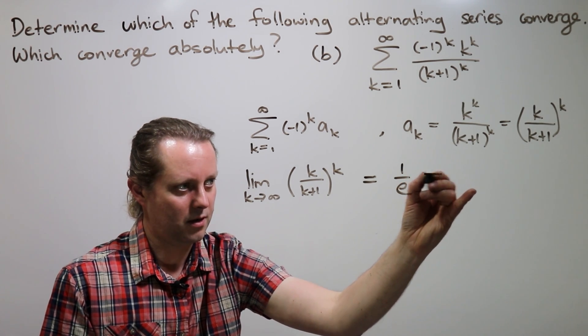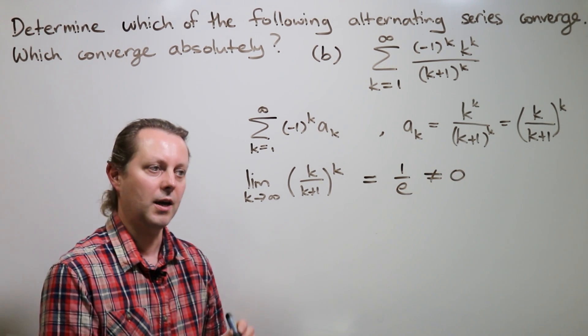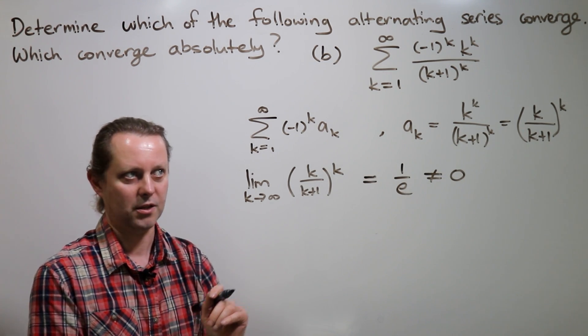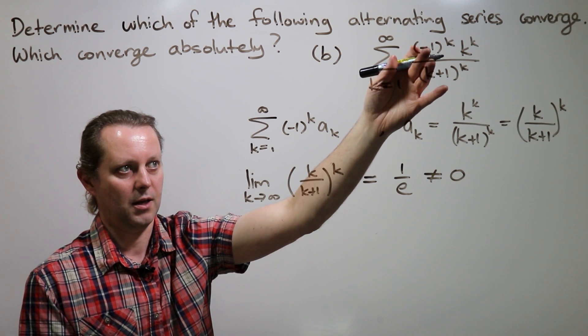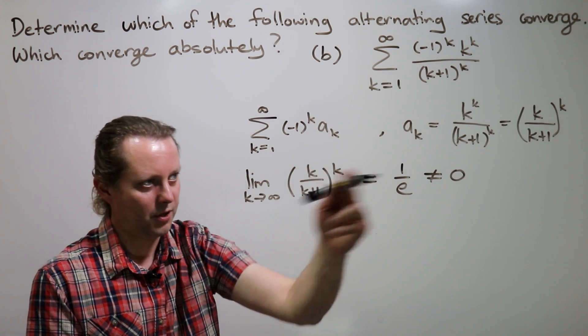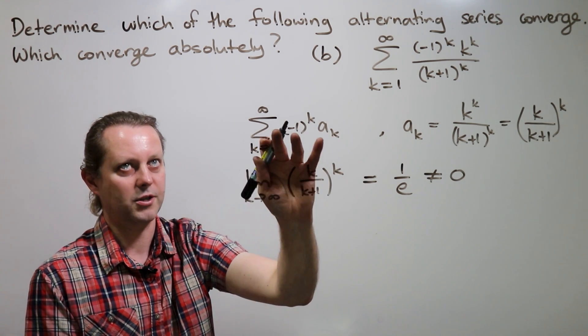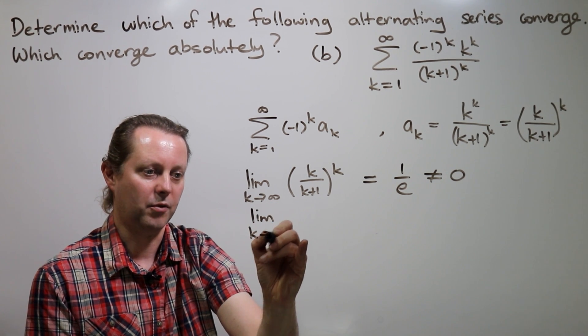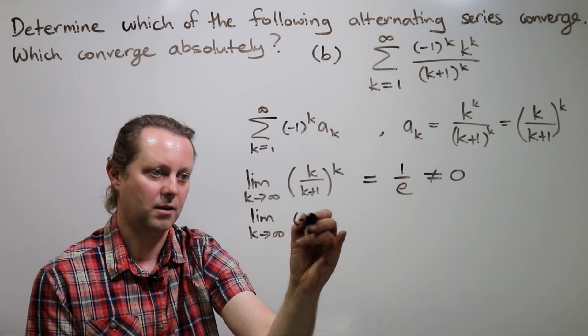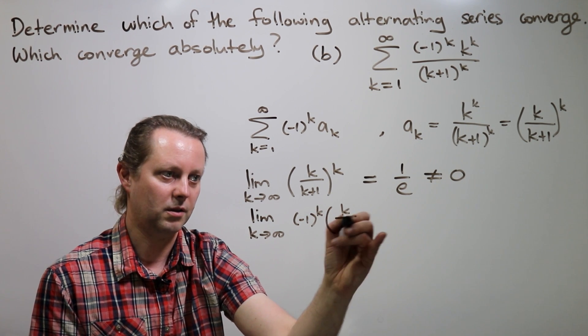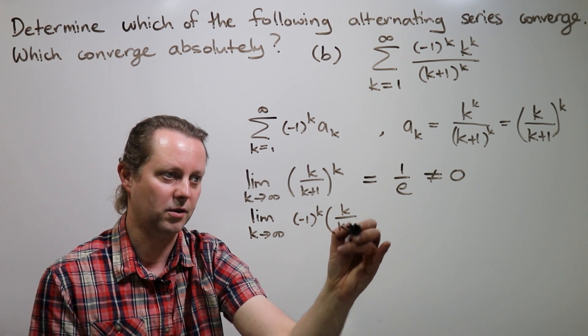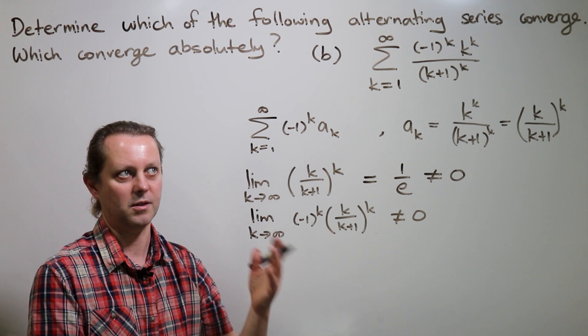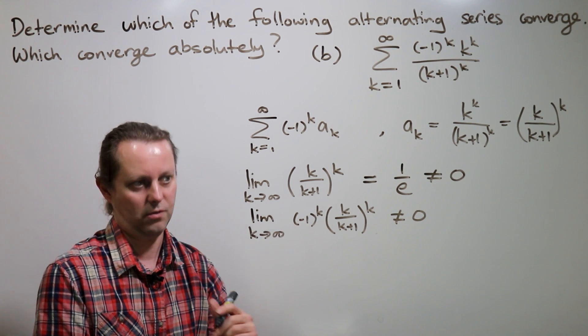The important thing about 1 over e is it's not zero. If it's not zero, then these terms here are not going to zero as k goes to infinity. And so there's no chance that this series, or in fact I've only checked the absolute value of this, there's certainly no chance that it's absolutely convergent. And also, if I put a minus one to the k in front of this, it's not going to have the same limit, but it's certainly not going to have a limit of zero. So by the nth term test, we can see that this series is neither convergent nor absolutely convergent.